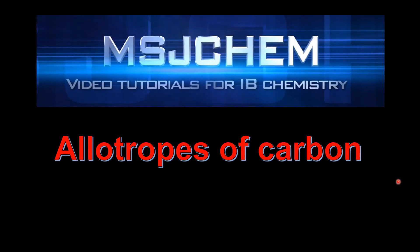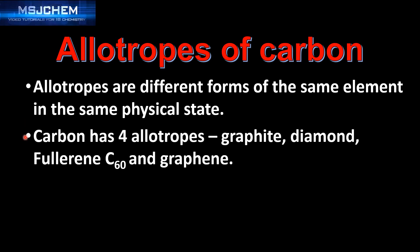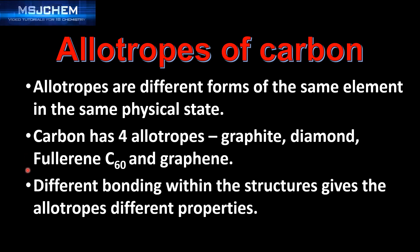This is MSJChem and in this video I'm going to look at the allotropes of carbon. Allotropes are different forms of the same element in the same physical state. Carbon has four allotropes: graphite, diamond, fullerene C60, and graphene. Different bonding within the structures gives the allotropes different properties.